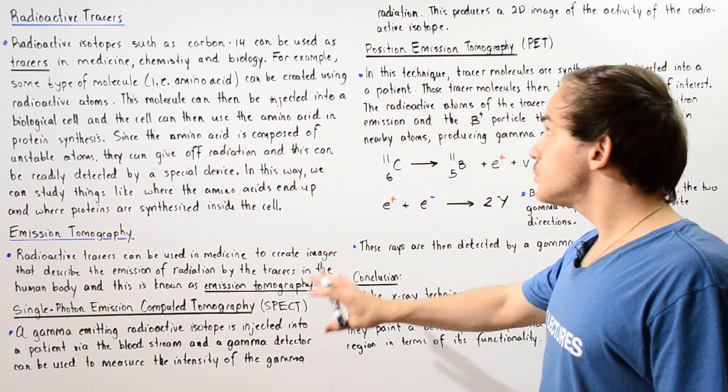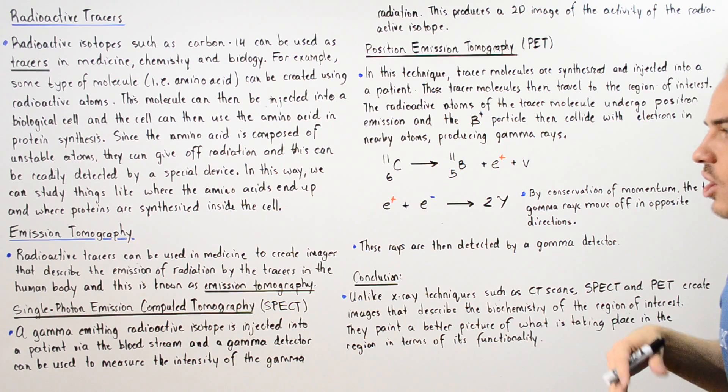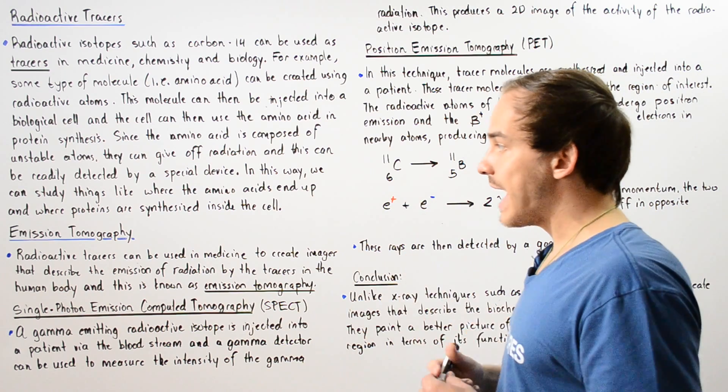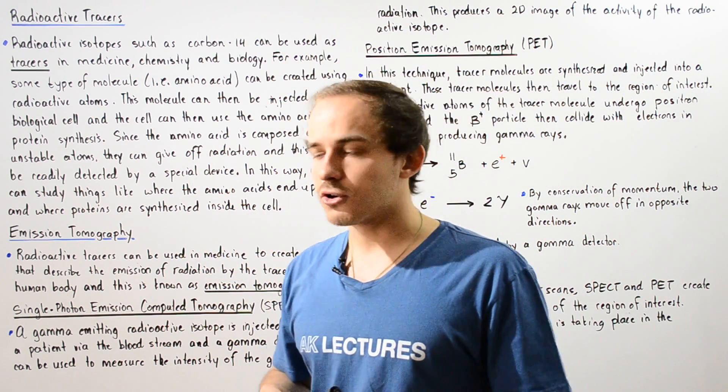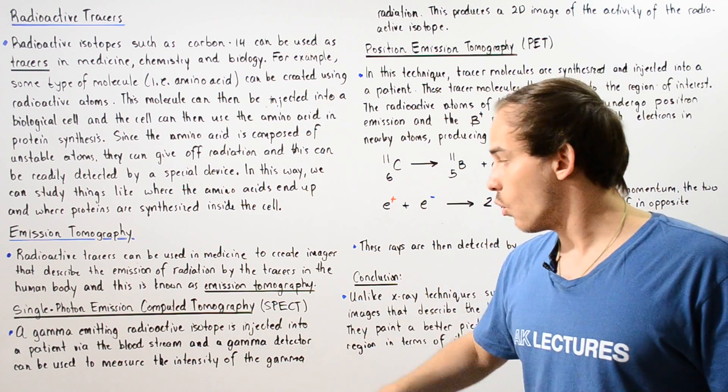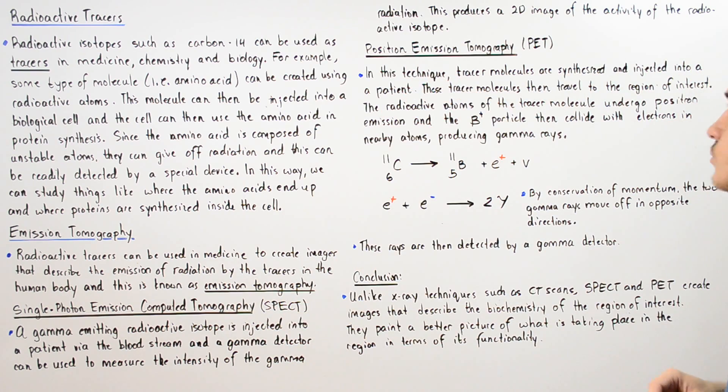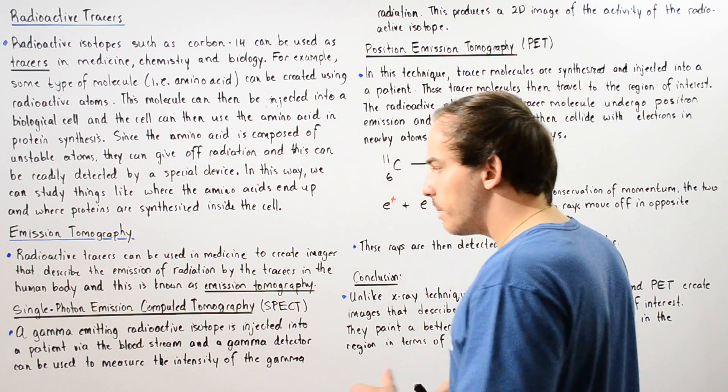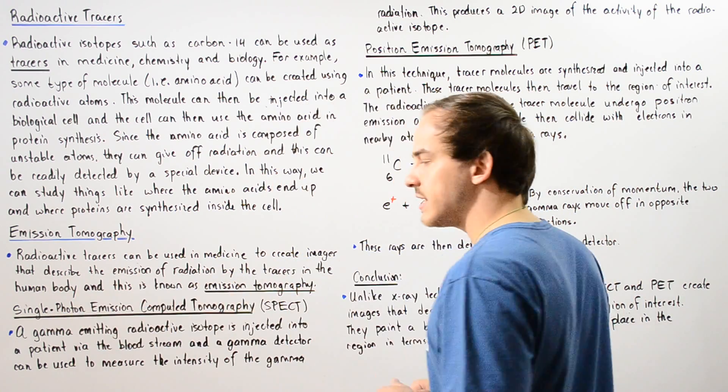There are two important techniques that fall into the category of emission tomography: single photon emission computed tomography or SPECT and positron emission tomography or PET.